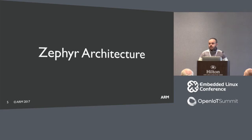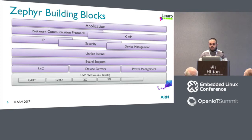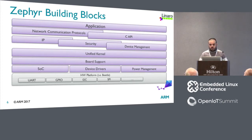Zephyr OS can be divided into a BSP, a set of kernel components, a high-level API, and an application. This is basically a generic image that runs on your hardware, like it does on Beetle, for example. The Zephyr kernel offers a single address space — the application and your kernel are compiled into a single image. It's highly configurable, as we have seen with KBuild and KConfig.